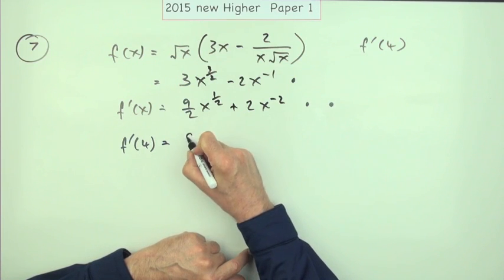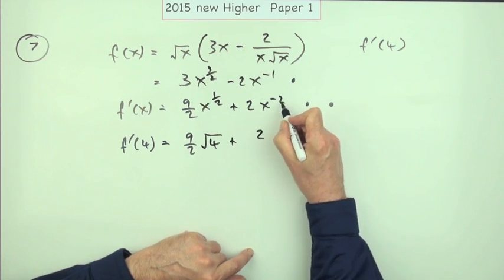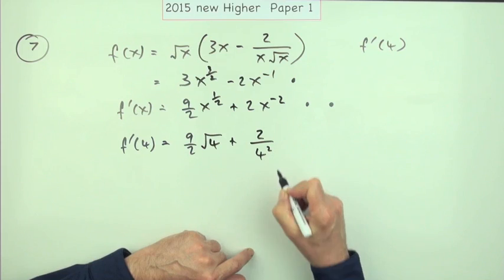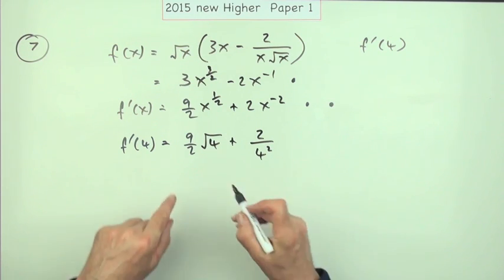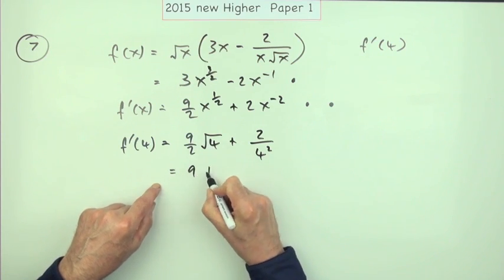So what's that? That's 9 upon 2 times the square root of 4, plus 2 to the negative 2 over 4 squared, is what you're working out. And that actually works out quite nicely because that's 2, 2 into 2 goes 1, so you've got 9 plus...